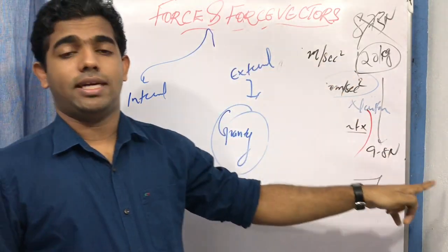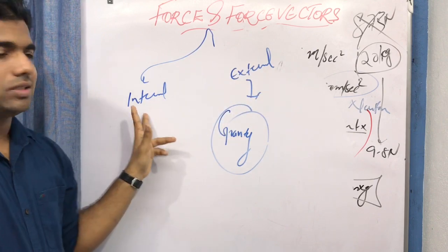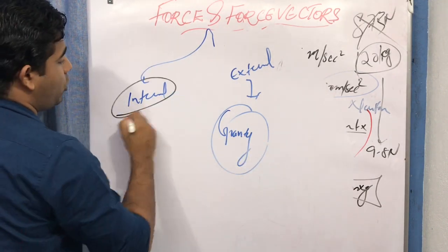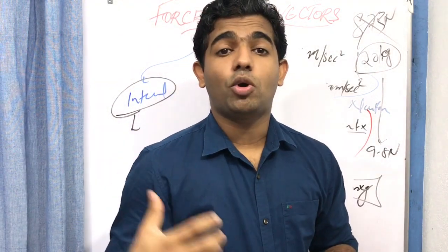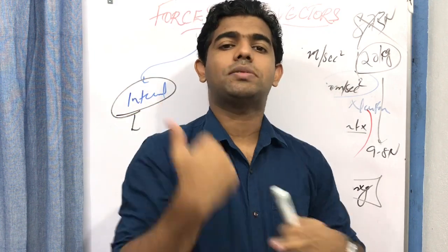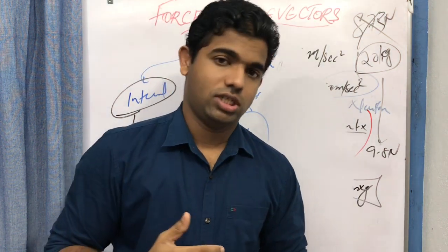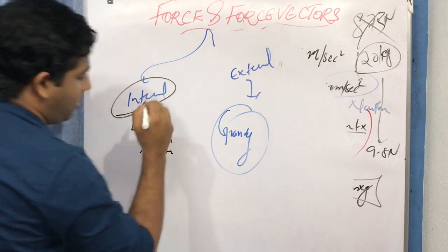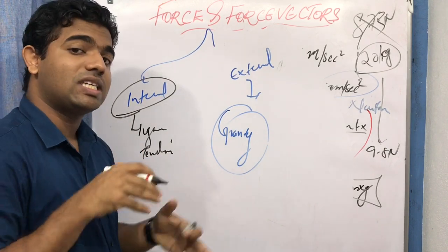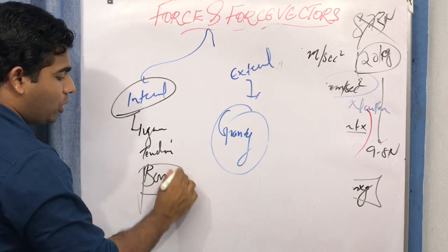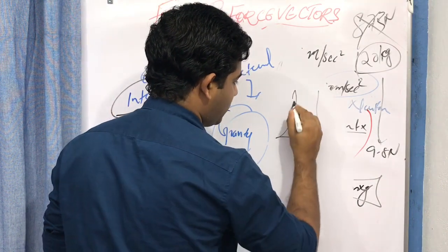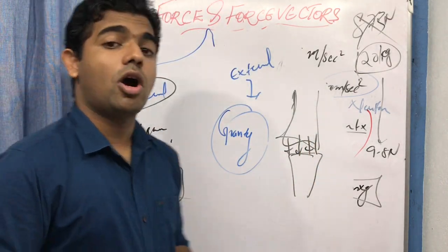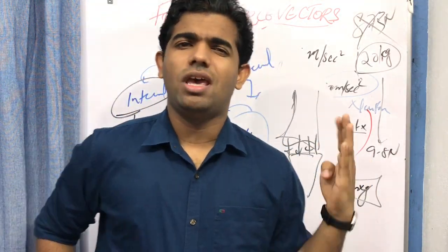So if asked about forces, write the unit, the conversions, and then note there are two types: external forces (from an object outside the body, including gravity) and internal forces. Internal forces are forces produced within the body itself. Examples include muscle contraction — like biceps contraction — ligament pull, tendon pull, and bone forces. For example, the force exerted by the femur on the tibia during weight bearing is an example of internal force.